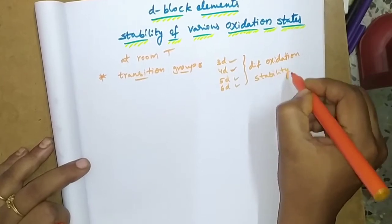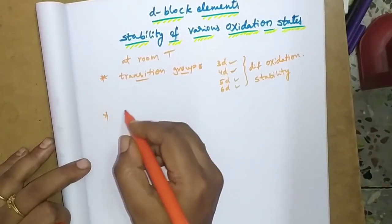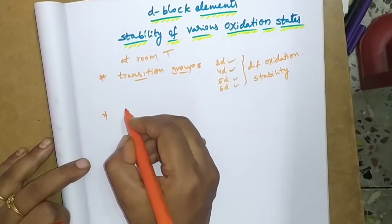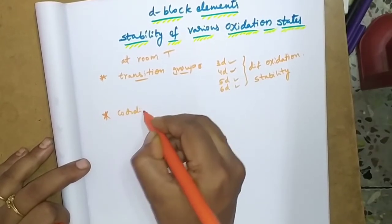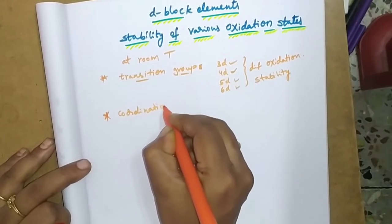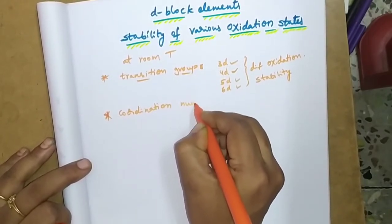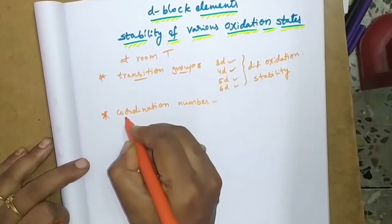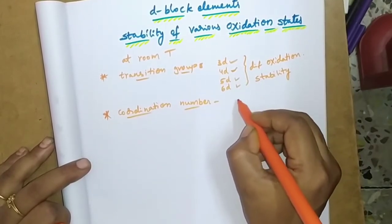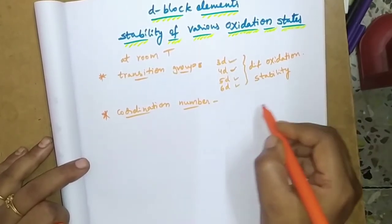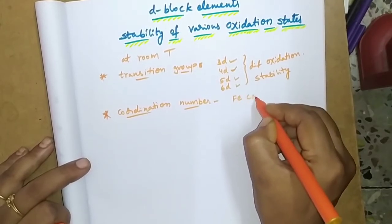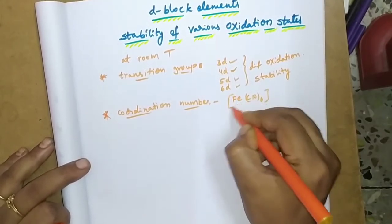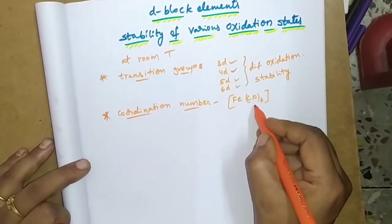Transition elements have higher coordination numbers. What is coordination number? Coordination number refers to the central atom. For example, in the complex Fe(CN)6, the coordination number indicates how many ligands are coordinated to the central nucleus.